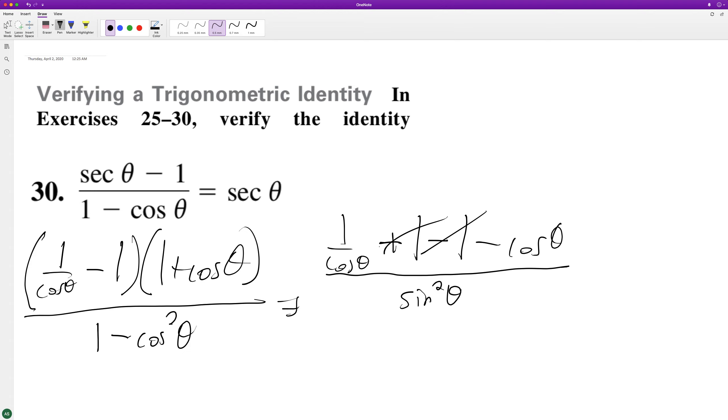On top, 1 over cosine theta minus cosine. We can convert that into 1 minus cosine squared theta over cosine theta, over sine theta.